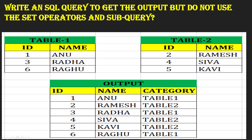The expected output should list ids 1 through 6 along with names Anuradha, Ramesh, Radha, Shiva, Kavi, and Raghu, plus a category column. Whatever data is coming from Table 1 should have category as 'Table 1', and whatever data is coming from Table 2 should have category as 'Table 2'. So Anuradha, Radha, and Raghu are Table 1; Ramesh, Shiva, and Kavi are Table 2.